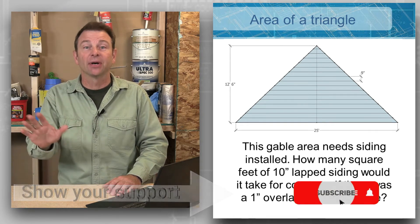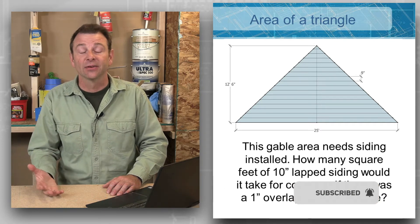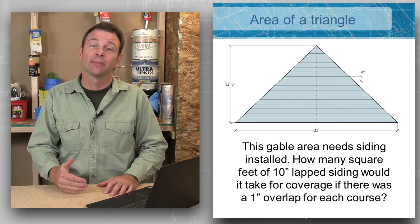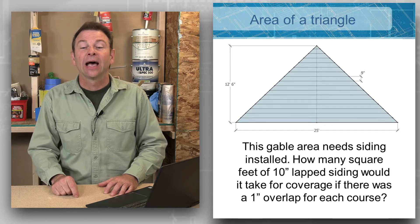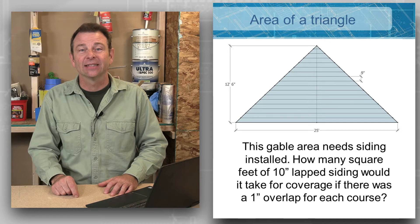Let me read this equation, then we're going to set it up and solve it. This gable area needs siding installed.